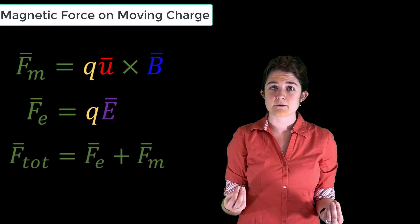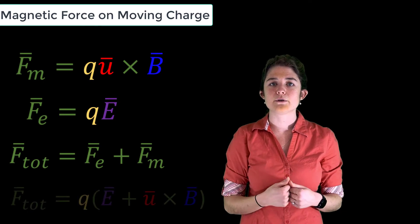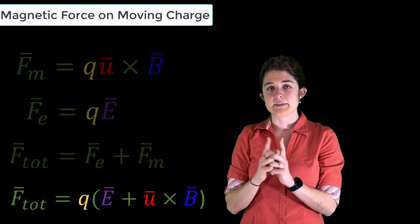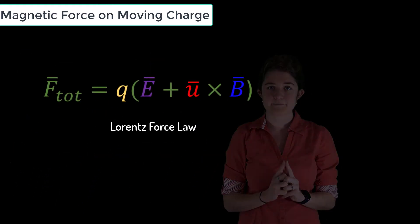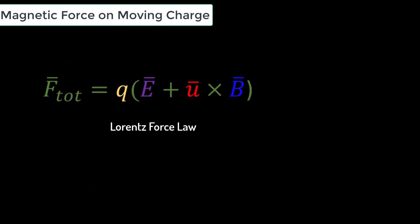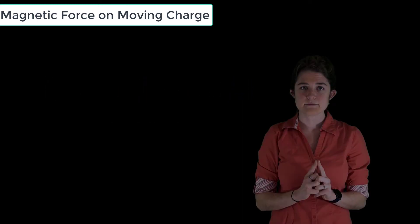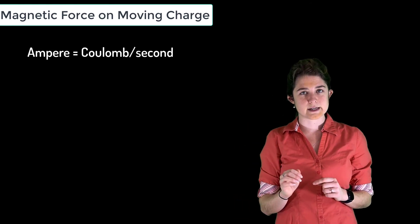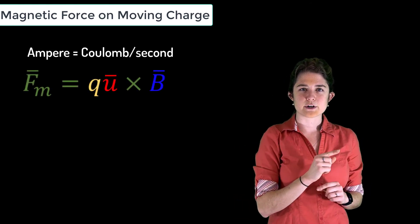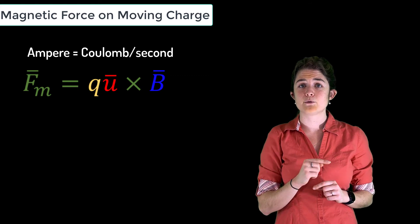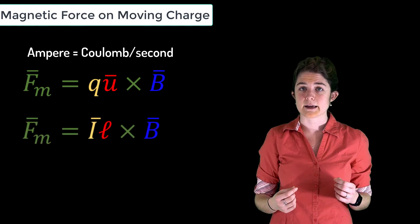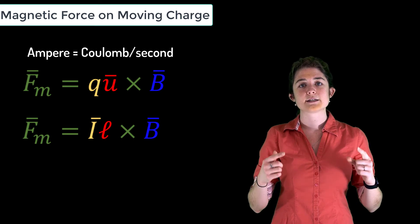electric and magnetic fields, is equal to q times the sum of E and u cross B. This is the Lorentz force law. Recall, an ampere is equal to a coulomb per second, so the qu term in the equation for magnetomotive force may be restated as the product of current times length. Then we can express the force